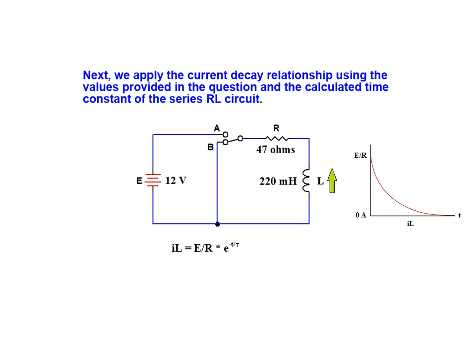Next we apply the current decay relationship using the values provided in the question and the calculated time constant of the series RL circuit. Evaluating the relationship, we wind up with an inductor current at 10 milliseconds of 30.151 milliamps.